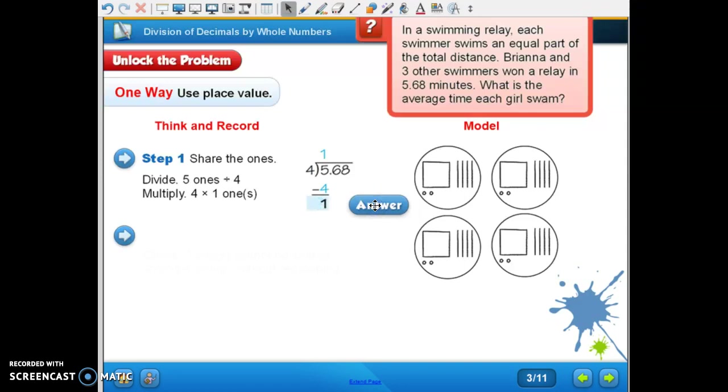So one times four is four, and then we subtract to get one. Subtract five ones minus four ones. Check. One one cannot be shared among four groups without regrouping.